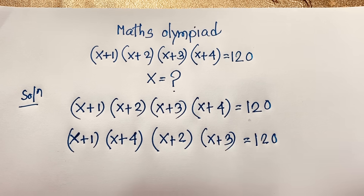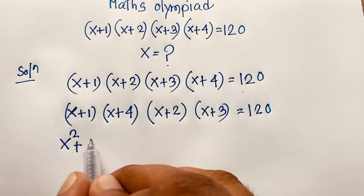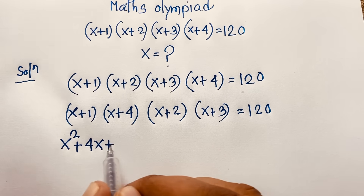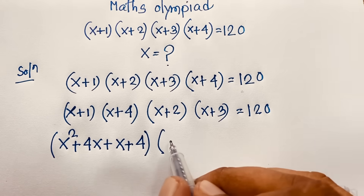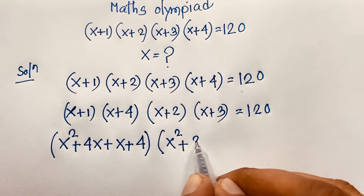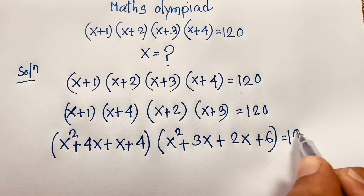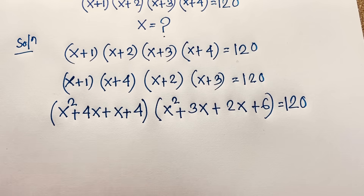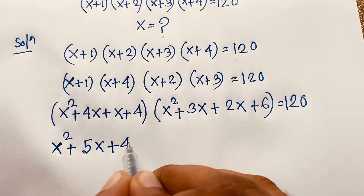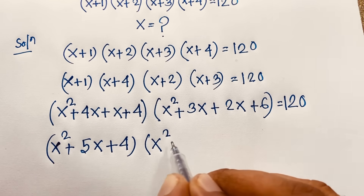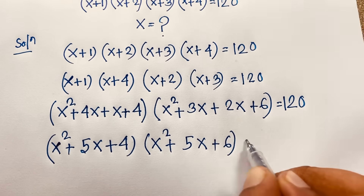Now I multiply both pairs. For (x+1)(x+4): x·x = x², x·4 = 4x, 1·x = x, 1·4 = 4, giving x²+5x+4. For (x+2)(x+3): x²+3x+2x+6 = x²+5x+6. So we have (x²+5x+4)(x²+5x+6) = 120.